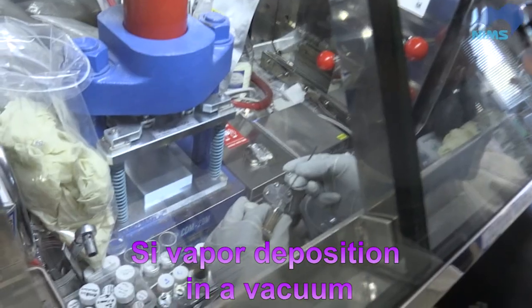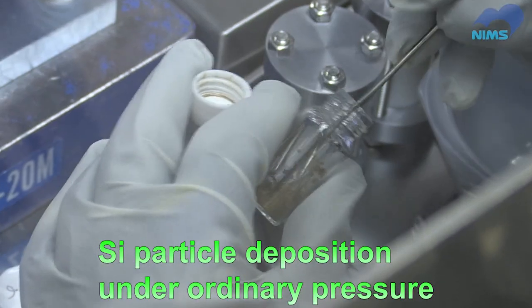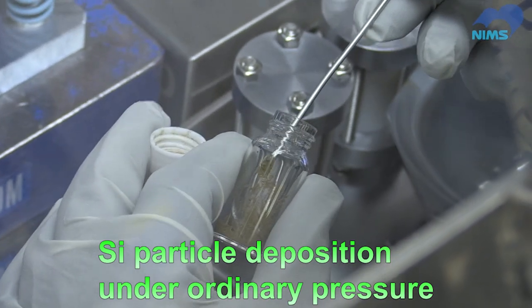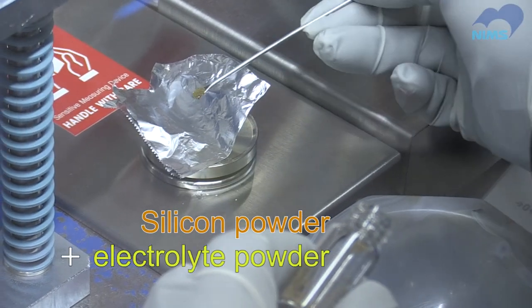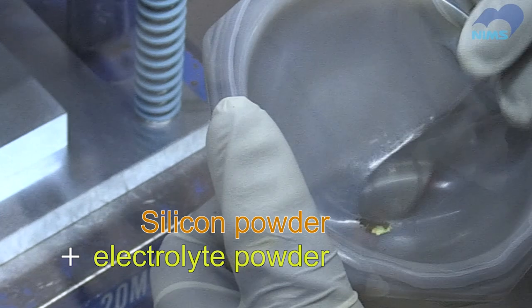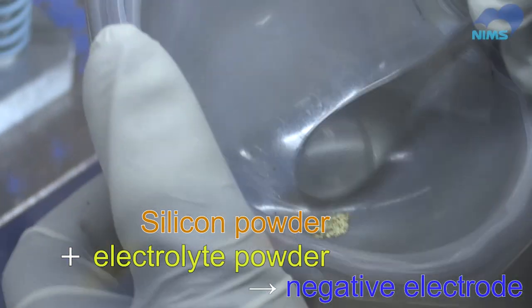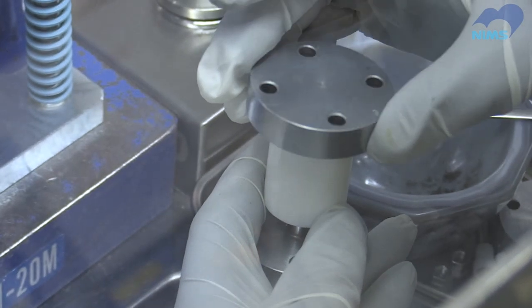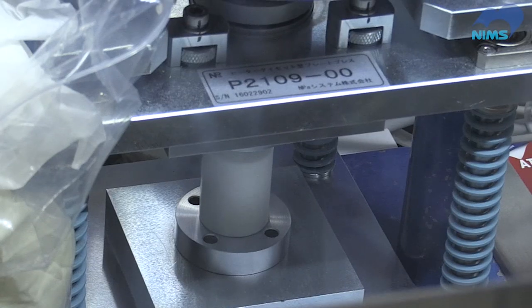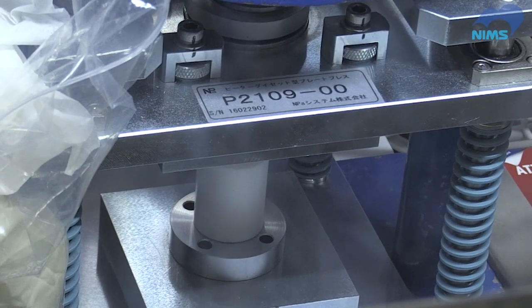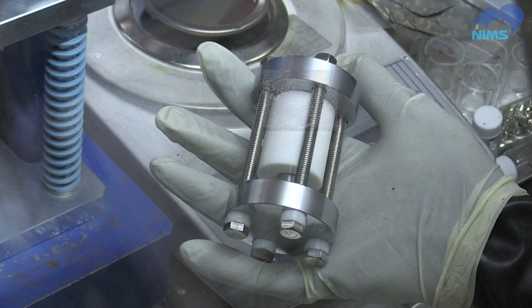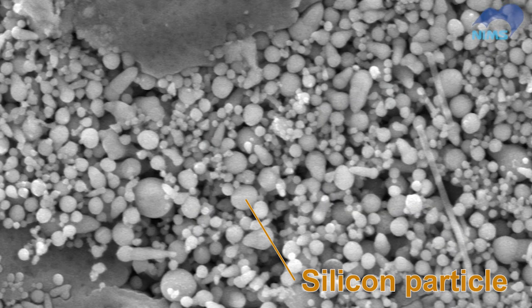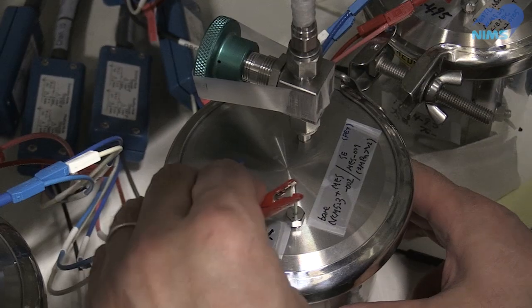He uses particle deposition in the air instead of vapor deposition in a vacuum. To prepare an anode composite, silicon particles are mixed with solid electrolyte particles, and the composite is placed on top of a separator. This is the same method used to prepare traditional graphite anode composites. Under magnification, we can see that the silicon and electrolyte particles form a compact anode layer.